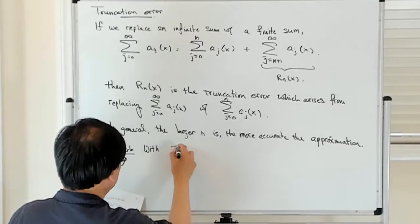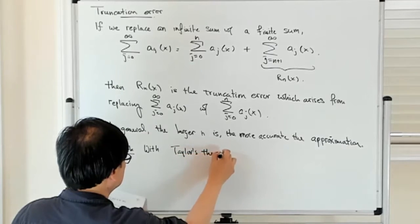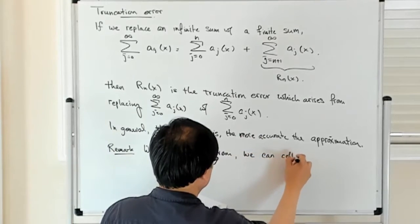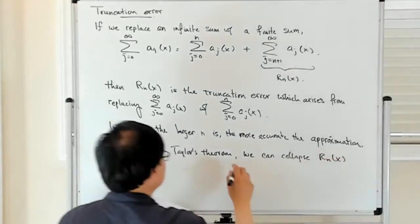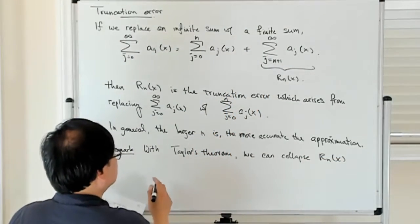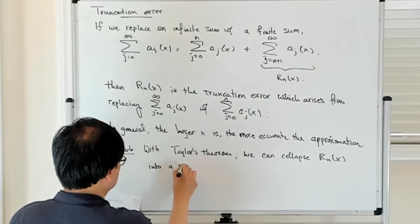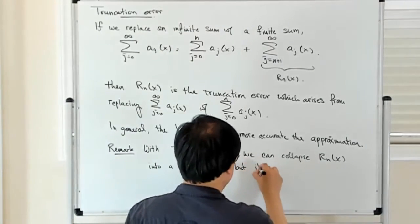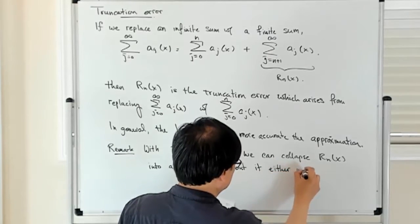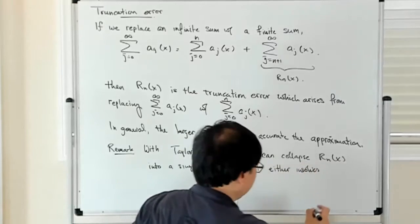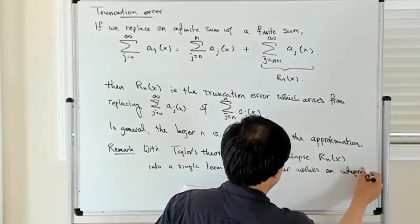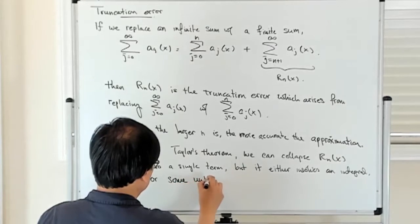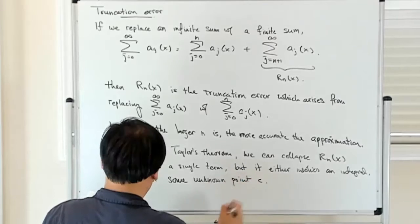If, from Taylor's theorem, we can collapse rn of x from this infinite sum in principle into a single term, but it either involves an integral which may be difficult to evaluate, or some unknown point c.